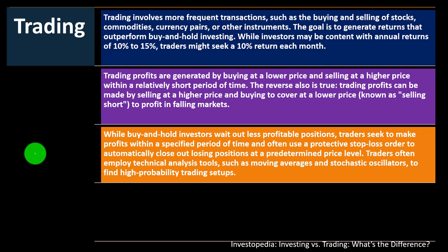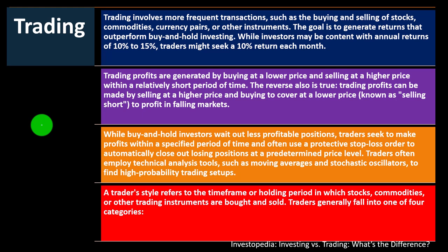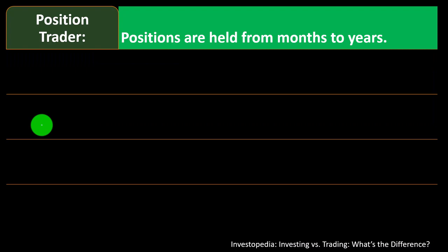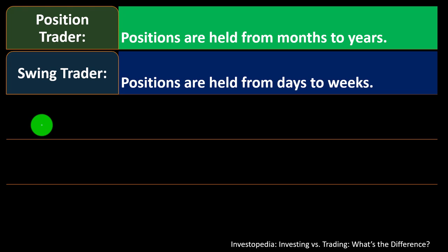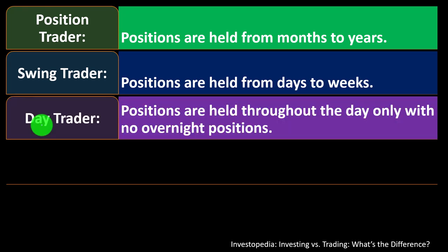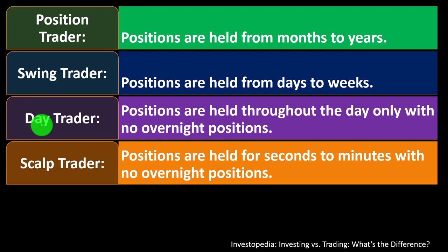While buy-and-hold investors wait out less profitable positions, traders seek to make profits within a specified time period and often use a protective stop-loss order to automatically close out losing positions at a predetermined price level. Traders also employ technical analysis tools such as moving averages and stochastic oscillators to find high-probability trading setups. Traders generally fall into four categories: position traders (months to years), swing traders (days to weeks), day traders (intraday only, no overnight positions), and scalp traders (seconds to minutes, no overnight positions).